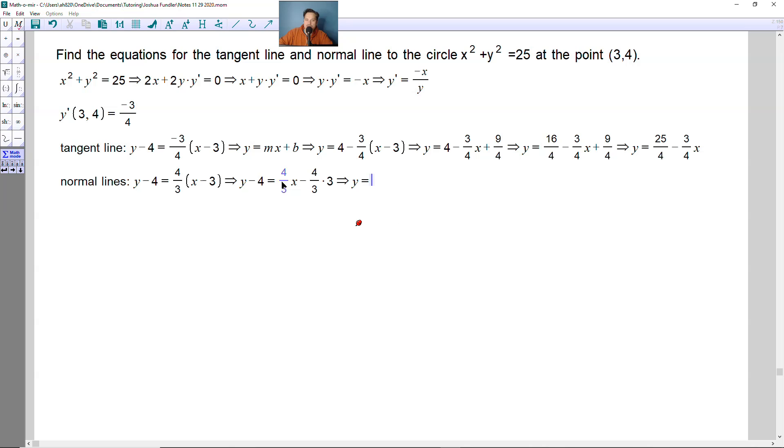Continuing here, y would be equal to, take this negative 4, move it to the right side, so it becomes positive 4 plus 4 thirds x. Now this 3 here and this 3 here basically cancel off, and you end up just with minus 4.